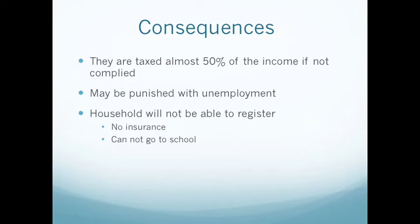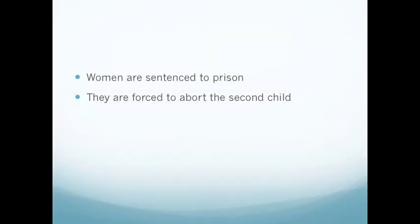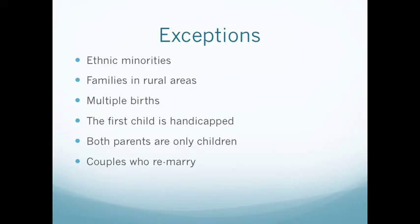To those who do not comply with the policy, there are sets of consequences. Citizens who have more than one child are taxed almost 50% of their income and may be punished with unemployment. Households who are not registered are not able to get insurance, and the children may not be allowed to go to school. Women who refuse to terminate a second child they are carrying can be sentenced to prison and are then forced to abort the child. An example was last June, when a woman who was 7 months pregnant was forced to abort her baby, even though Chinese laws clearly prohibit abortions past 6 months.